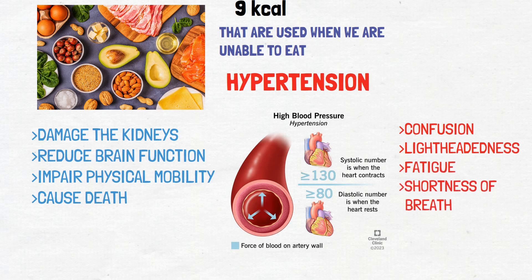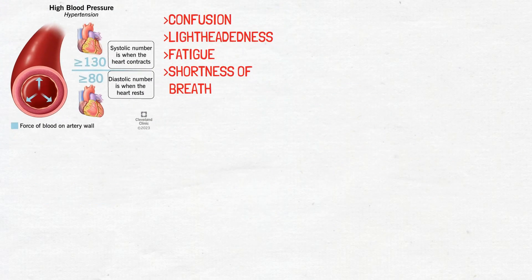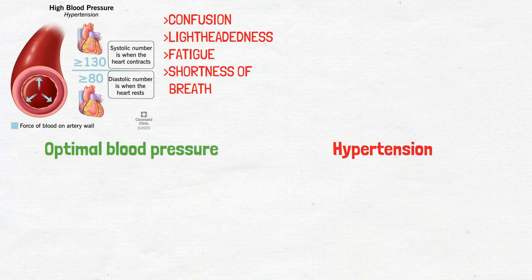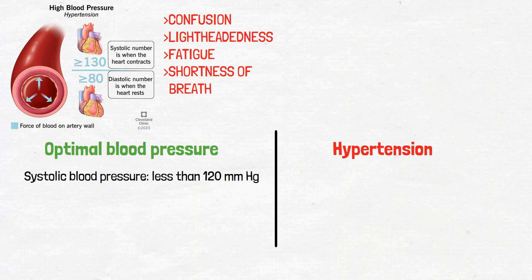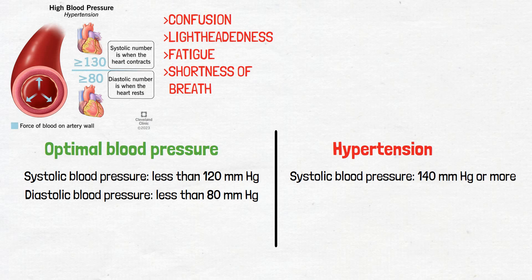Blood pressure is measured in two phases: the pressure in the arteries when the heart contracts, which is the systolic pressure, and the pressure in the arteries when the heart relaxes, which is the diastolic pressure. Below is a comparison between optimal blood pressure and hypertension. Optimal blood pressure is when the systolic blood pressure is less than 120 mm of mercury and the diastolic blood pressure is less than 80 mm of mercury. Hypertension is when the systolic blood pressure is 140 or more and the diastolic blood pressure is 90 or more.